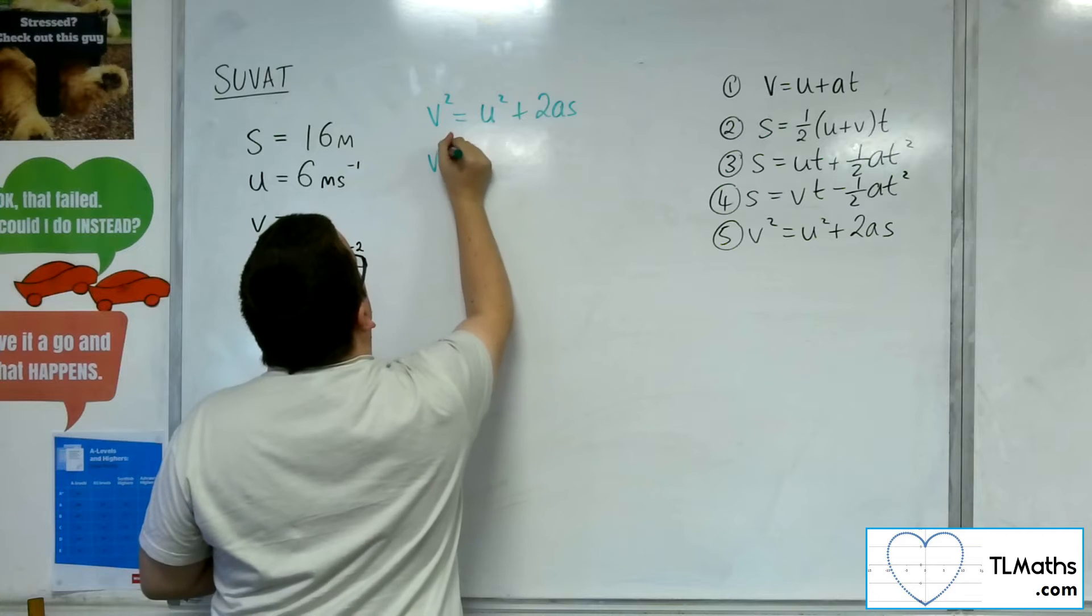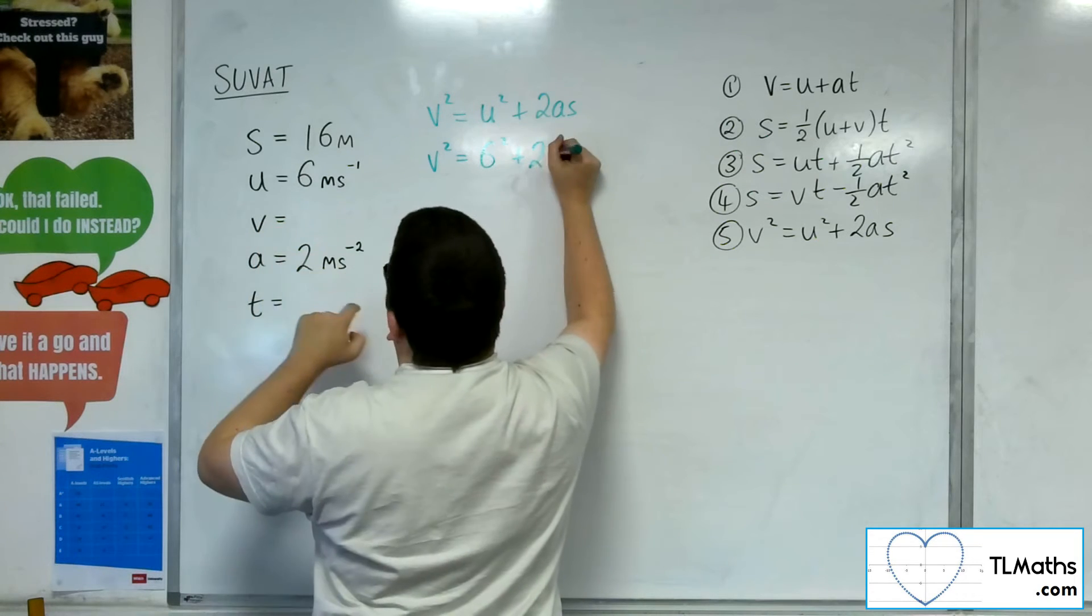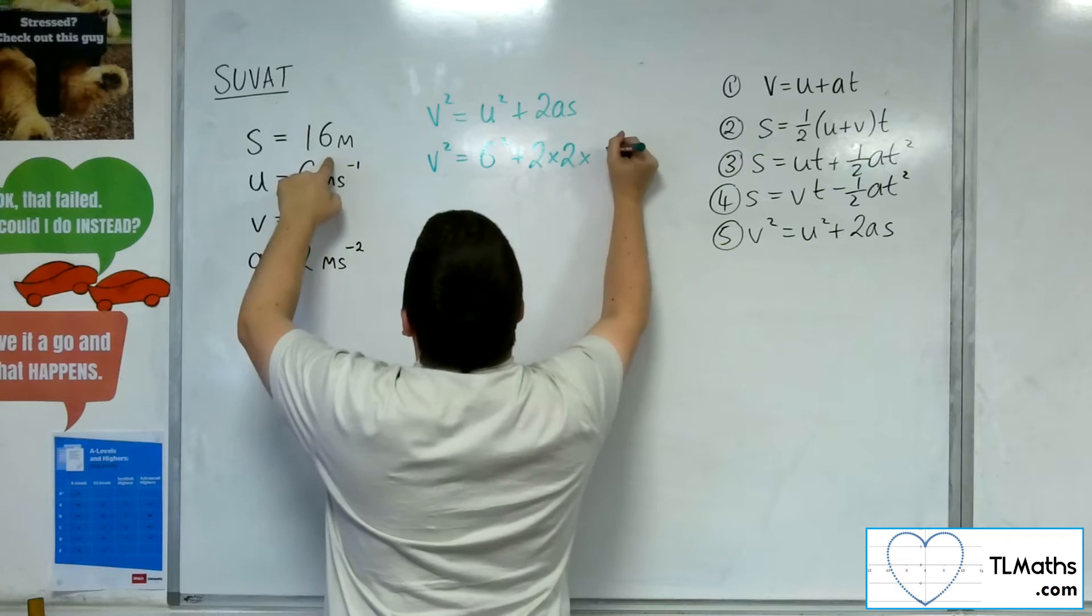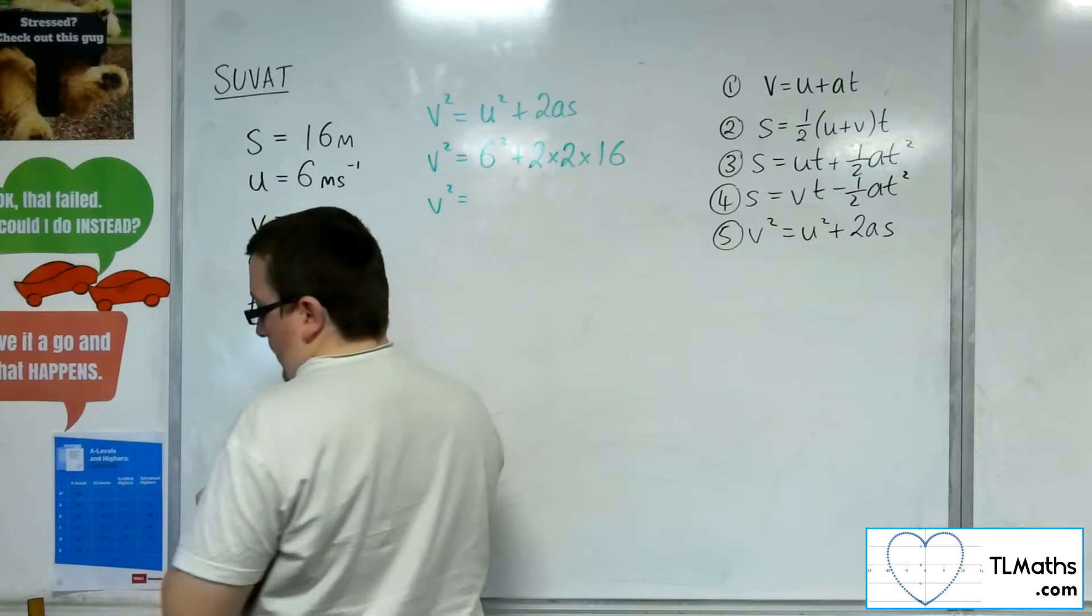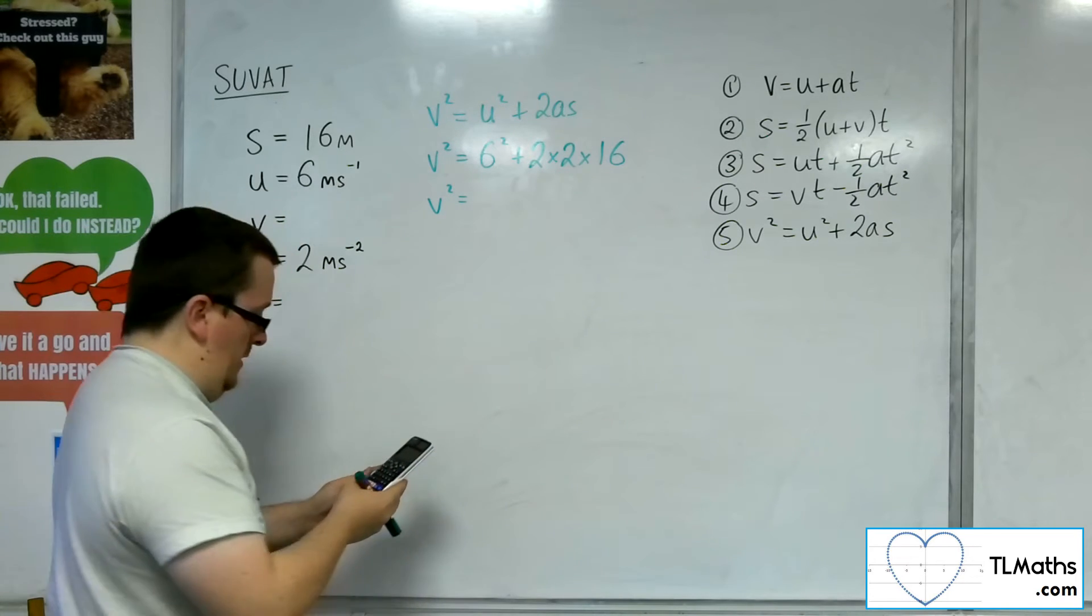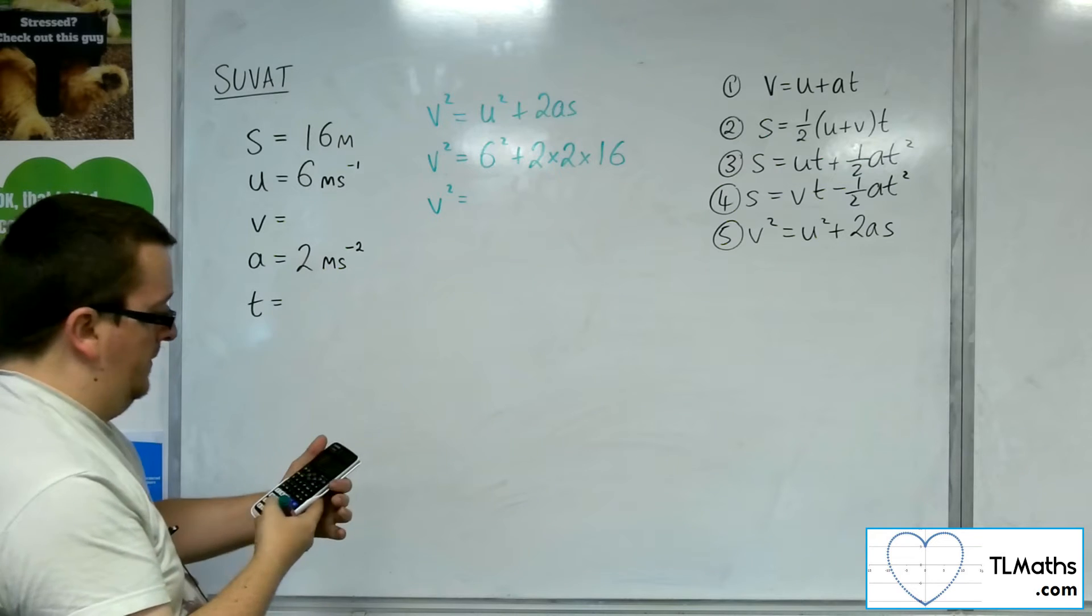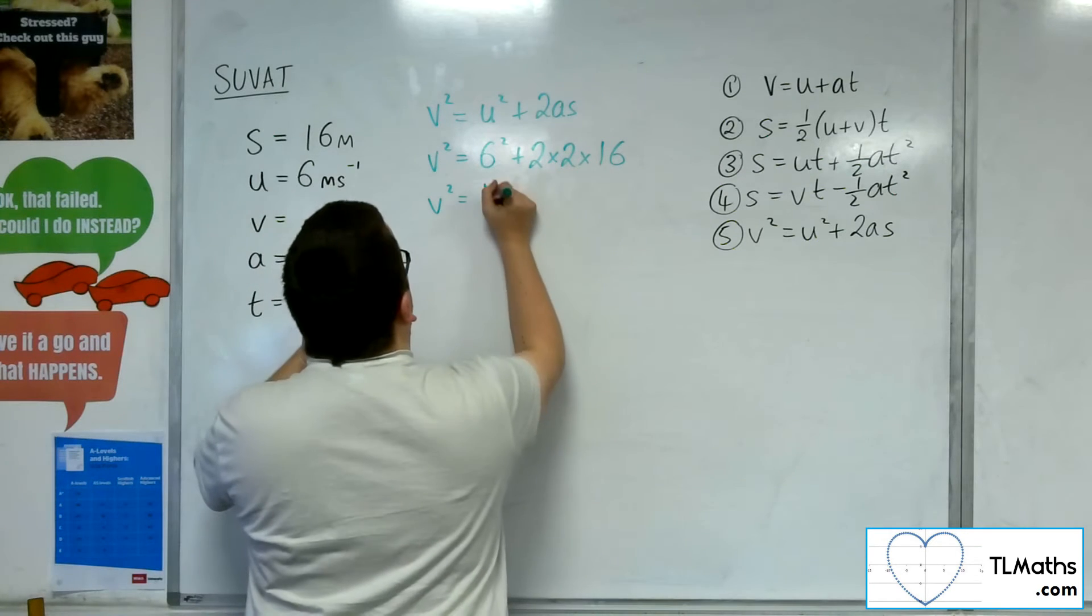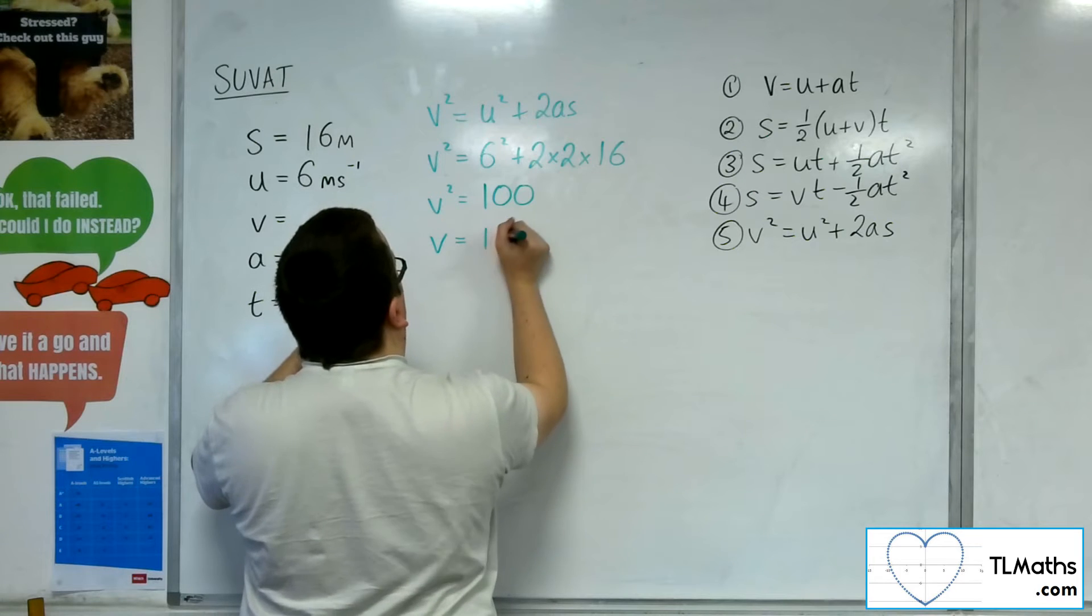So v squared is u squared, so 6 squared plus 2 lots of a times s. So v squared is, we've got 6 squared plus 2 times 2 times 16 and that gets me 100. And so v is 10.